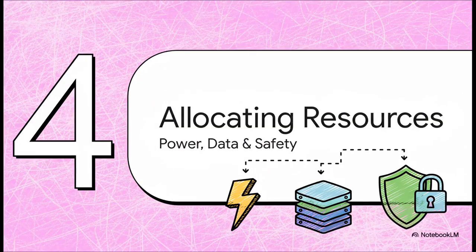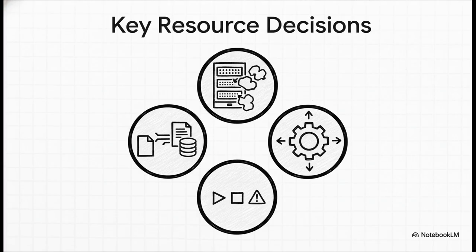Now we have the structure, so it's time to get practical and plan the building's utilities — where the power comes from, how data is going to flow, and what happens in an emergency. Making these resource decisions is absolutely crucial. You have to decide where your code is physically going to run and pick the right way to store your data: is a simple file okay, or do you need a massive, powerful database? And most importantly, you have to plan for what we call boundary conditions. What happens if the system fails? What happens when it first starts up? A truly great blueprint thinks about these stressful moments ahead of time.